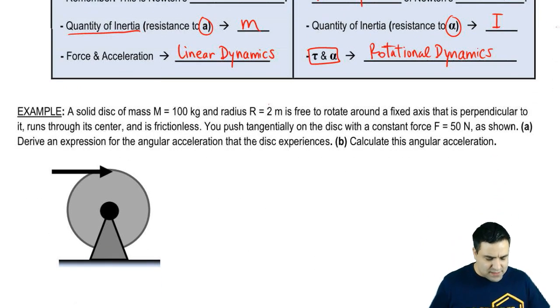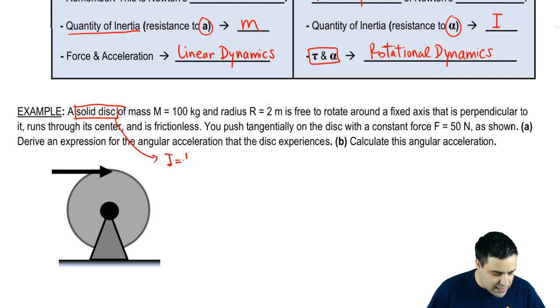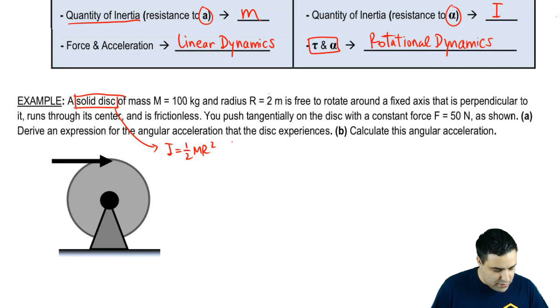So here it says, I have a solid disk. Solid disk. Remember, this is the shape of the disk. So I can stop and write the moment of inertia is half MR squared. Solid disk of mass M = 100 kg and radius R = 2 m. So I already get those numbers.